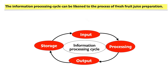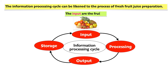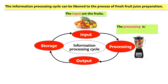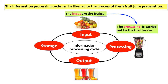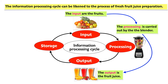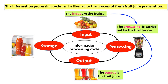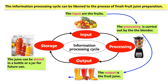The information processing cycle can be likened to the process of fresh fruit juice preparation: the input is the fruits, the processing is carried out by the blender, the output is the fruit juice, and the juice can be stored in a bottle or in a jar for future use.